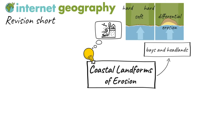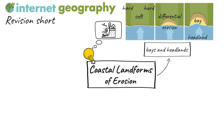Less resistant rock such as boulder clay erodes more rapidly than more resistant rock such as chalk. The bands of soft rock such as sand and clay erode more quickly than those of resistant rock such as chalk. This leaves a section of land jutting out into the sea called a headland. The areas where the soft rock has eroded away next to the headland are called bays. Sandy beaches are often found in sheltered bays where waves lose energy and their capacity to transport material decreases, resulting in material being deposited.